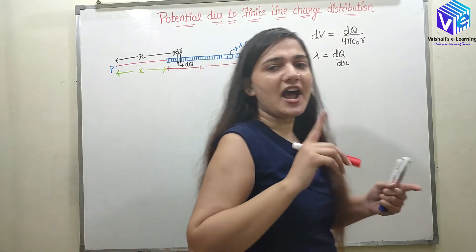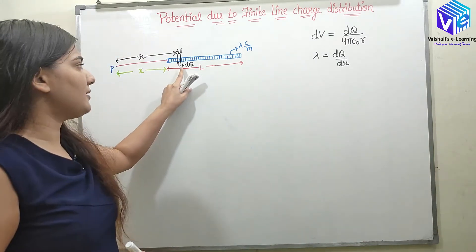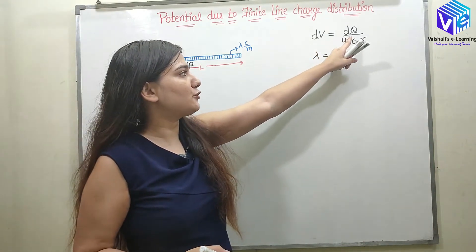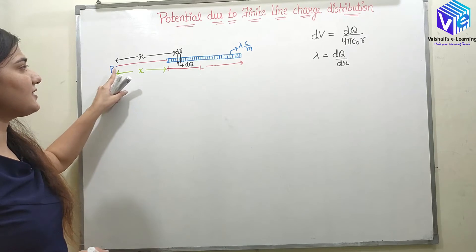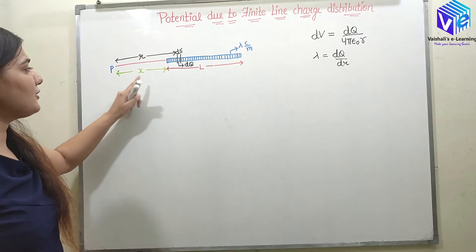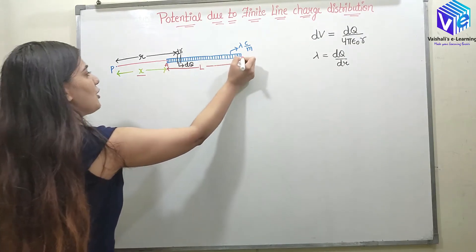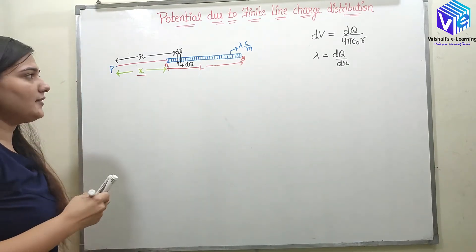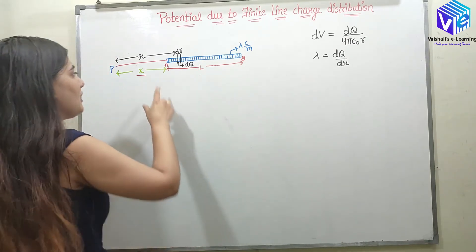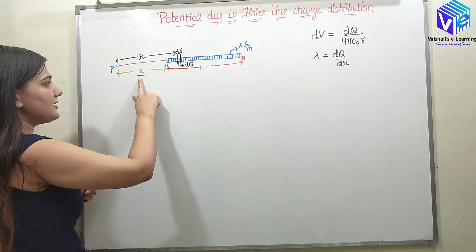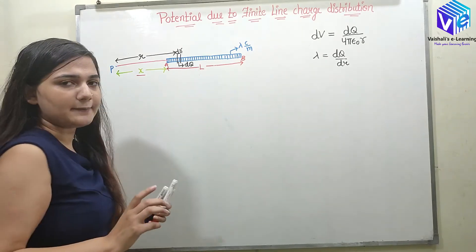If I know the point charge, I know the potential due to the point charge. The potential due to the point charge will be given as DV = DQ / (4πε₀R), because point P is at distance R from this DQ. I have taken this length to be X. The point A is where the line charge distribution starts and point B is where it ends. The distance between P and A is X, and the distance between A and B is the length of our line charge distribution, capital L.